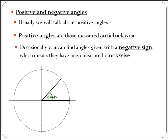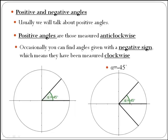But what happens if I ask you to draw the angle minus 45 degrees? The angle of minus 45 degrees will be an angle of 45 degrees measured clockwise, which means starting from here, we will have this angle here. And therefore, this one would be minus 45 degrees. It would be more common for engineers to work with negative angles.